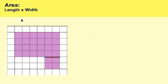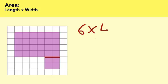So let's find the area of the top portion. The area of the top portion: we have one, two, three, four, five, six — and then we're going to multiply six by one, two, three, four. Let's do our multiplication: six times four, which is equal to 24 square units.